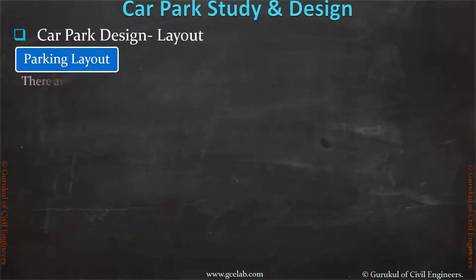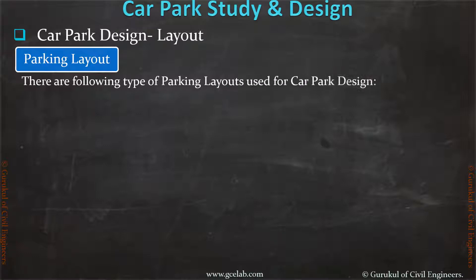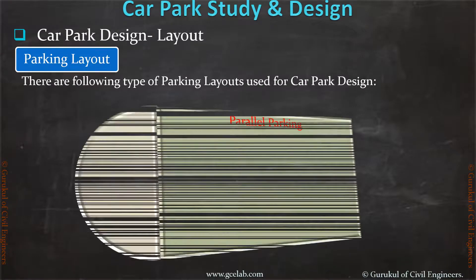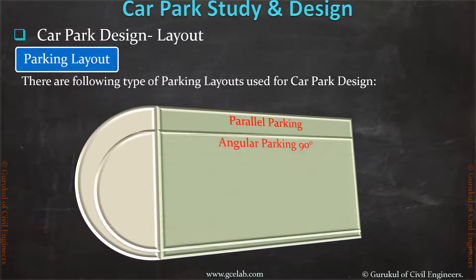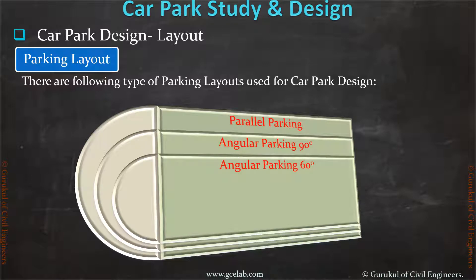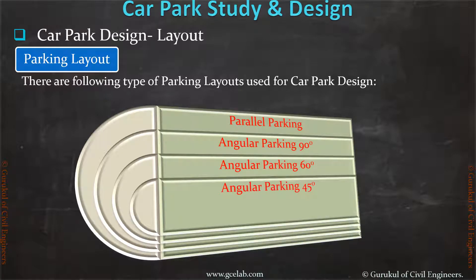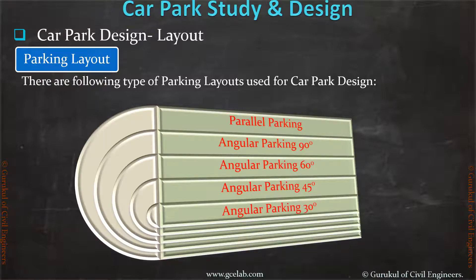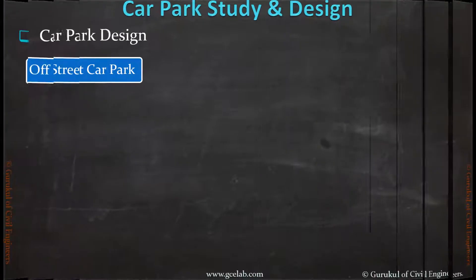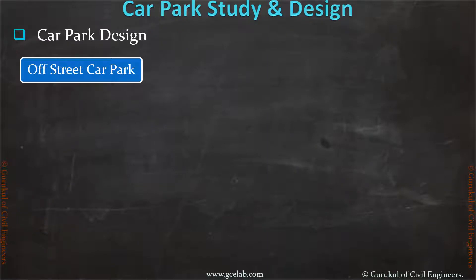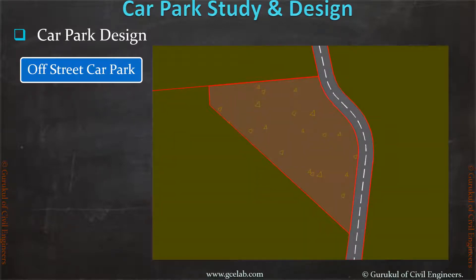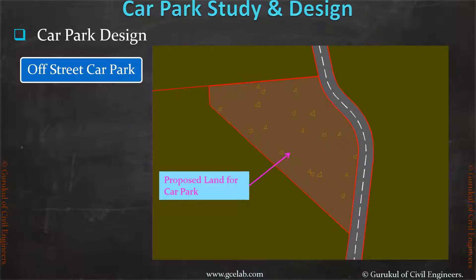There are five types of parking layout used for car park design: parallel parking, angular parking at 90 degrees, angular parking at 60 degrees, angular parking at 45 degrees. Suppose you have to design a new car park in a new greenfield area as shown in the picture — we will provide you a detailed car park design process.